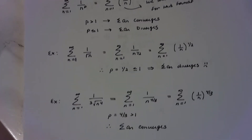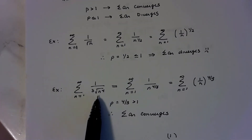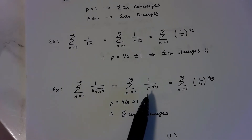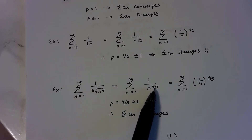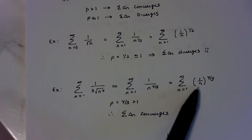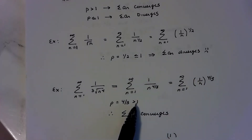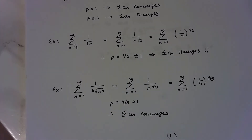Here's another one. We've got 1 over the cube root of n to the 4th. We would rewrite that as 1 over n to the 4 thirds, to put it in the form 1 over n to the p. Since 4 thirds is greater than 1, this series converges.